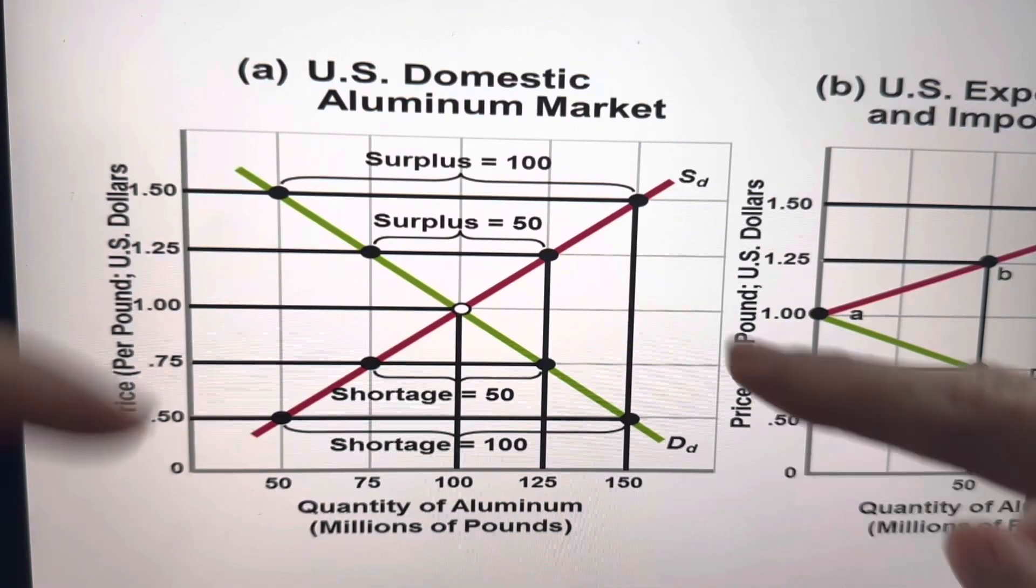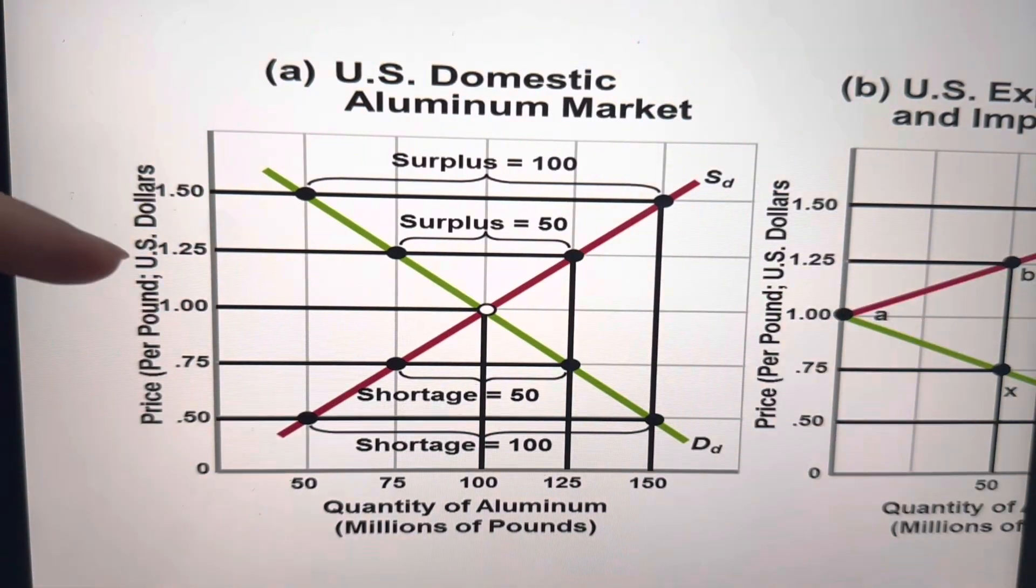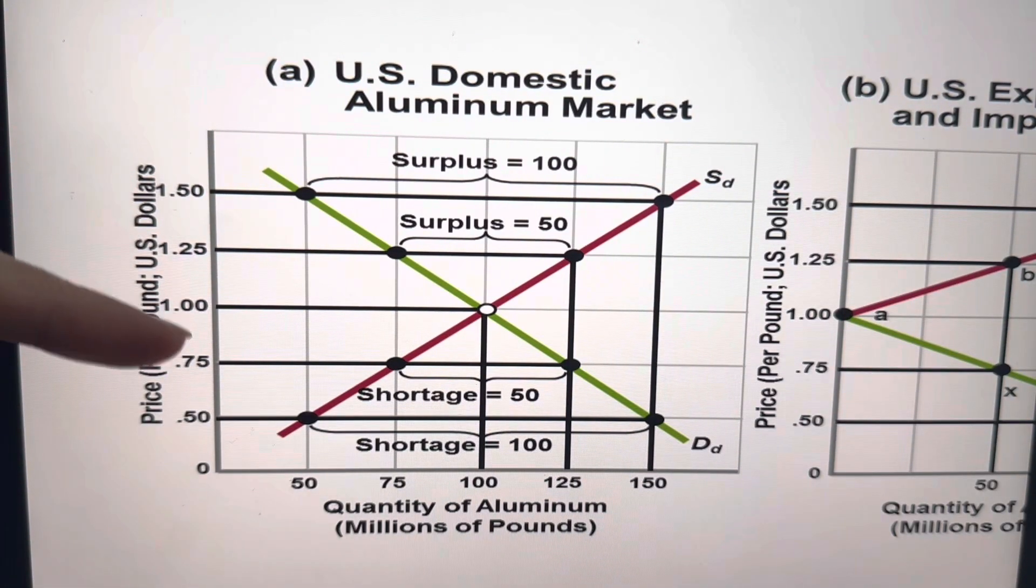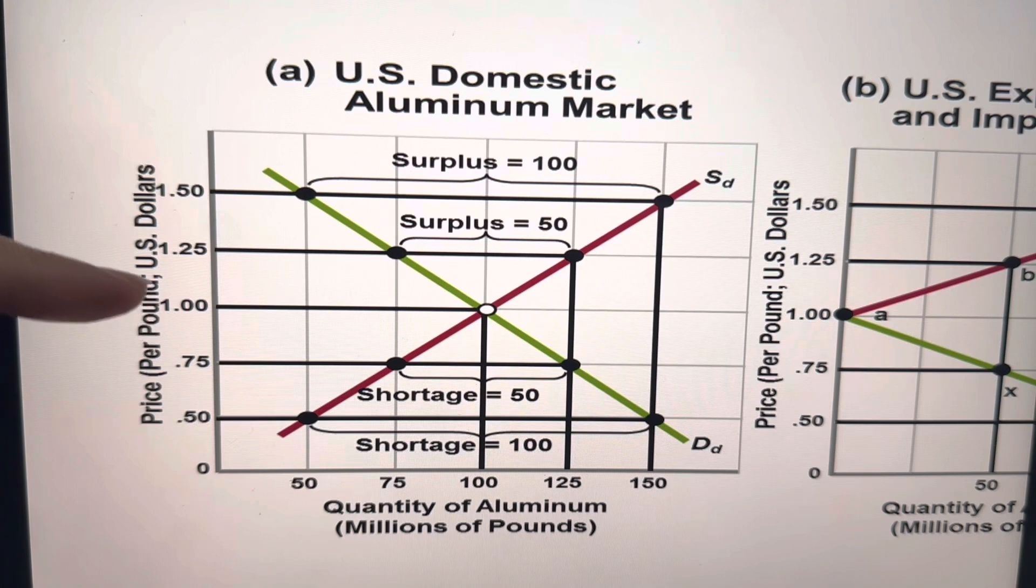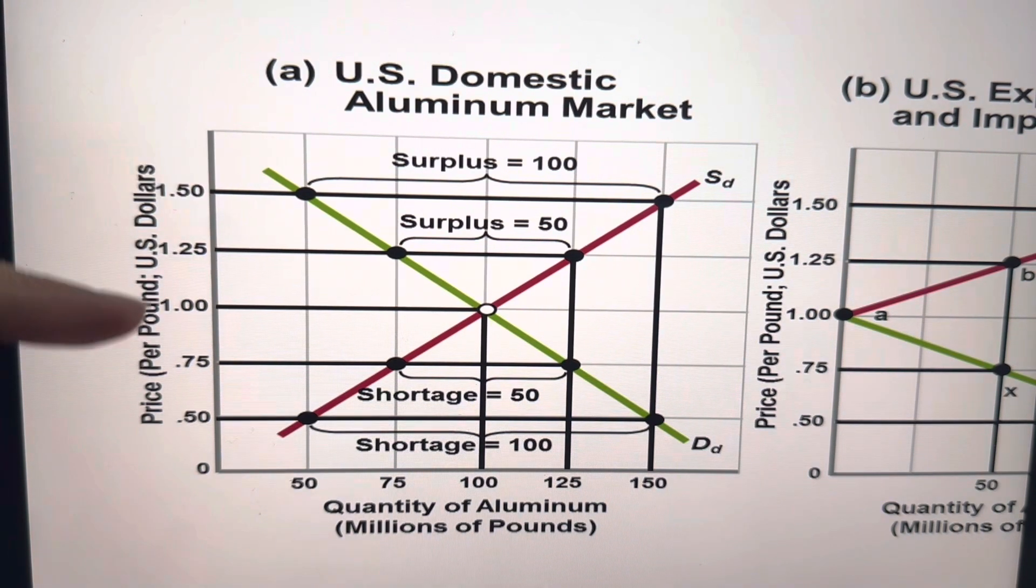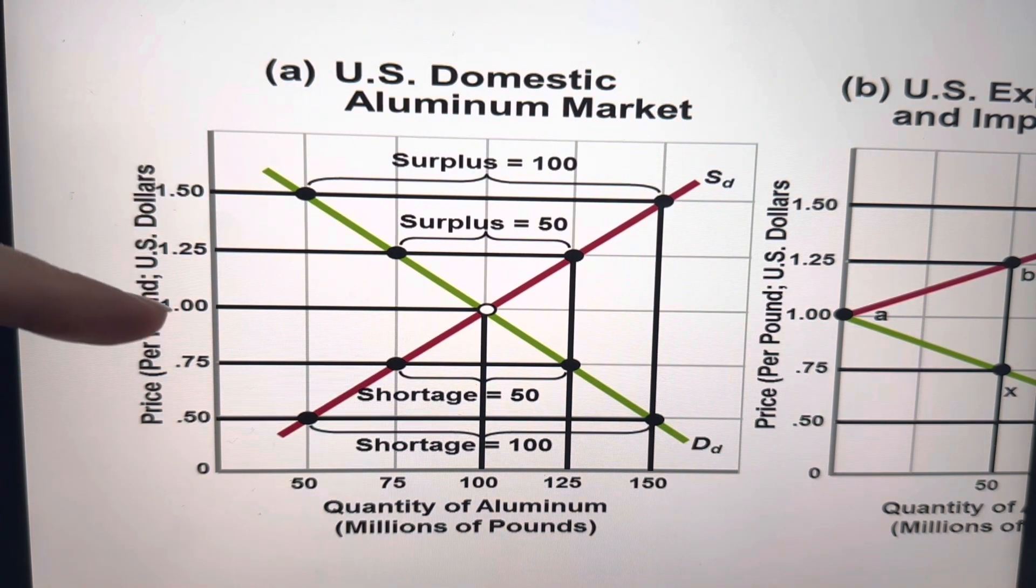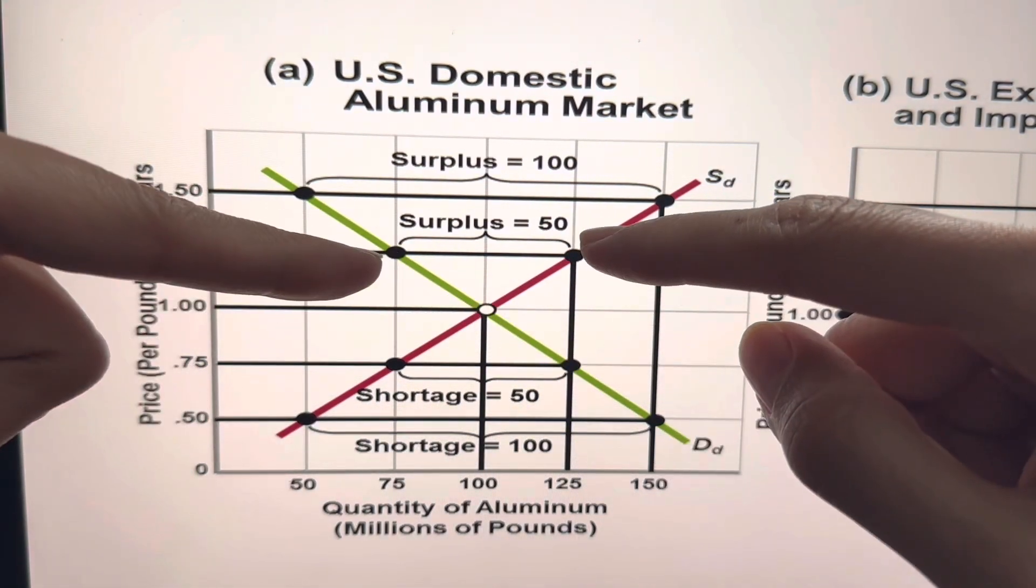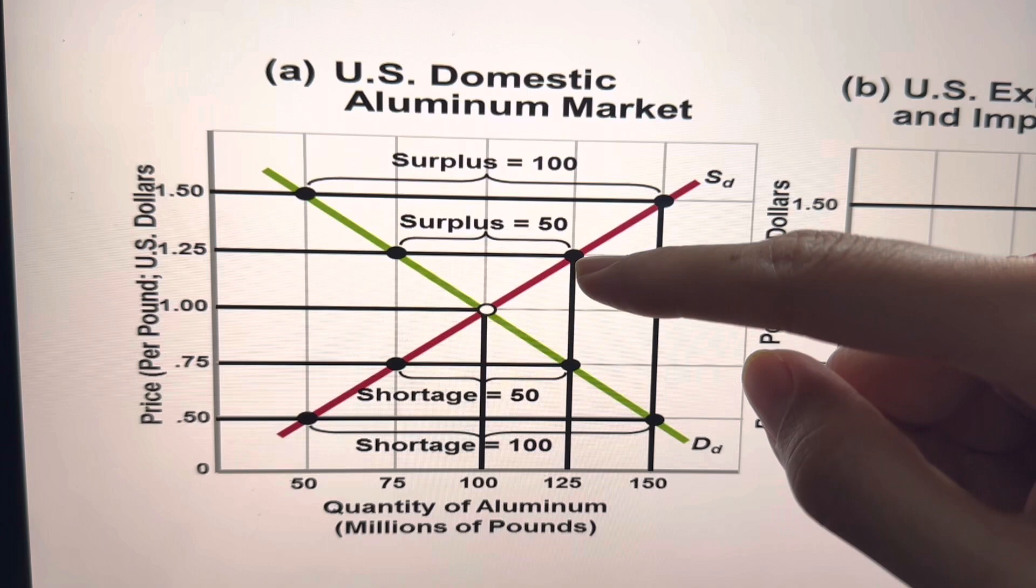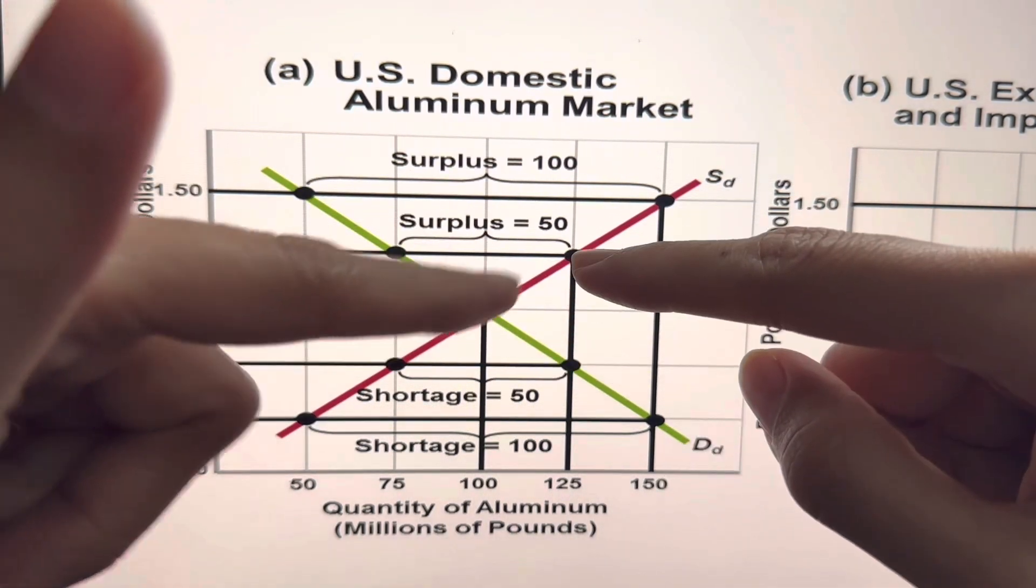Now, likewise, let's talk about what happens when the price is higher, higher than the domestic equilibrium price. As you can see earlier, $1 is the equilibrium price of aluminum. So if the price is higher than $1, here at $1.25, you can see there's a surplus, meaning excess supply.